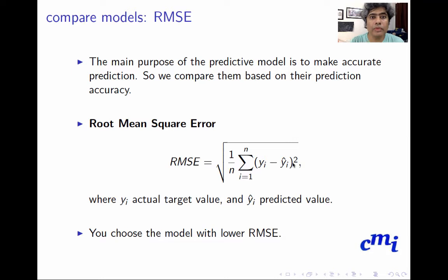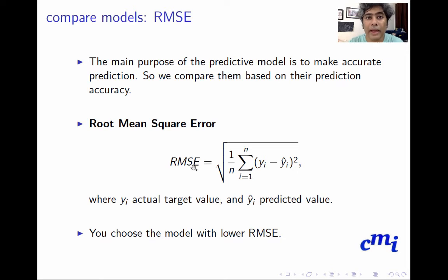Root mean square error is defined as: take y_i, the i-th actual target value, minus ŷ_i, the predicted value — this is the residual or error ε_i. Square it, sum over all observations, take the average to get the mean square error, then take the square root to get the root mean square error (RMSE).